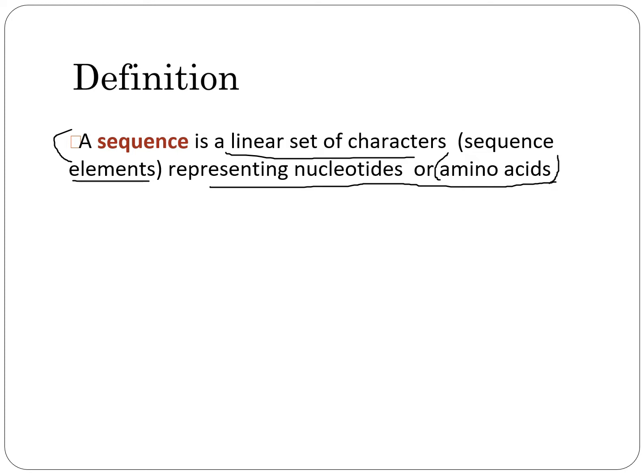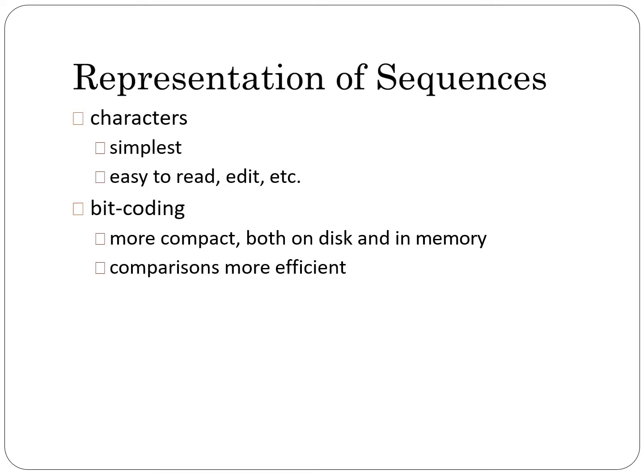So a sequence is a linear set of characters — A, C, G, T for nucleotides — and there are 20 different alphabets for amino acids, corresponding to the 20 different amino acids.